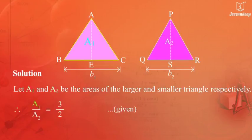Therefore, A1 upon A2 equals 3 upon 2 as given.